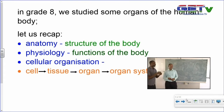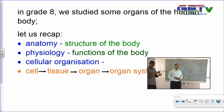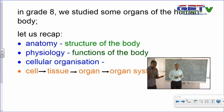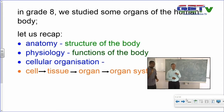Let us go to grade 8. In grade 8, we looked at some organs of the human body — let us recap. There are some essential terms: anatomy deals with the structure of the body; physiology deals with the functions of the body. Cellular organization describes the way the body is made up of cells that are grouped into tissue, tissue into organ, organ into organ system, and organ system to the organism. There should be an arrow between organ system and organism.